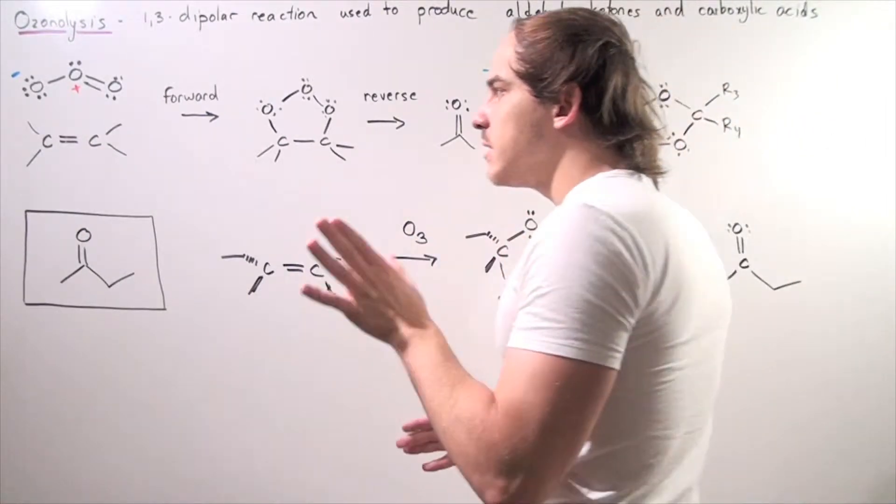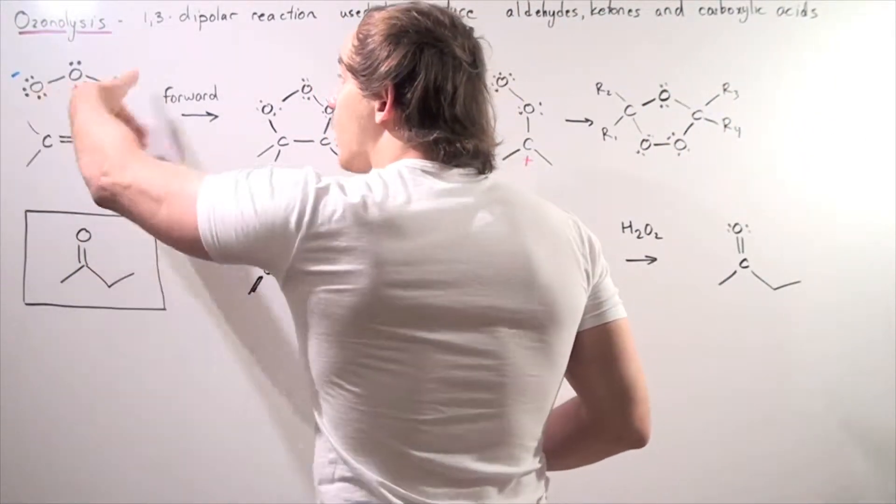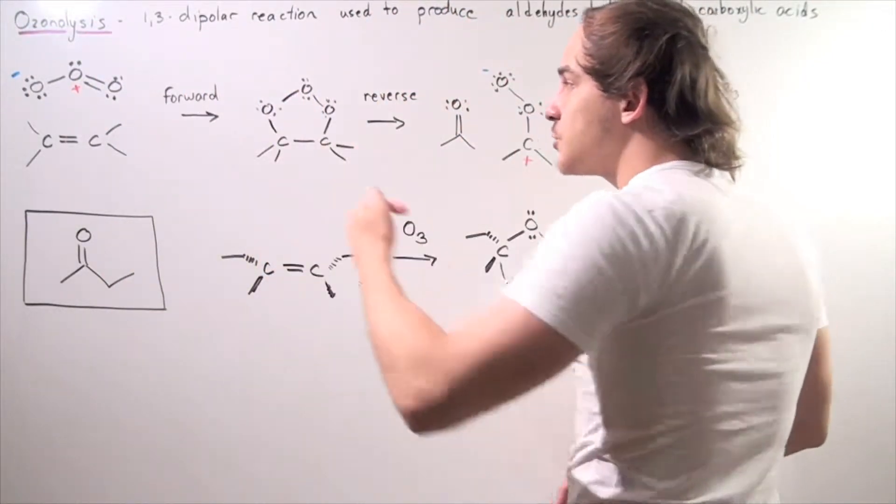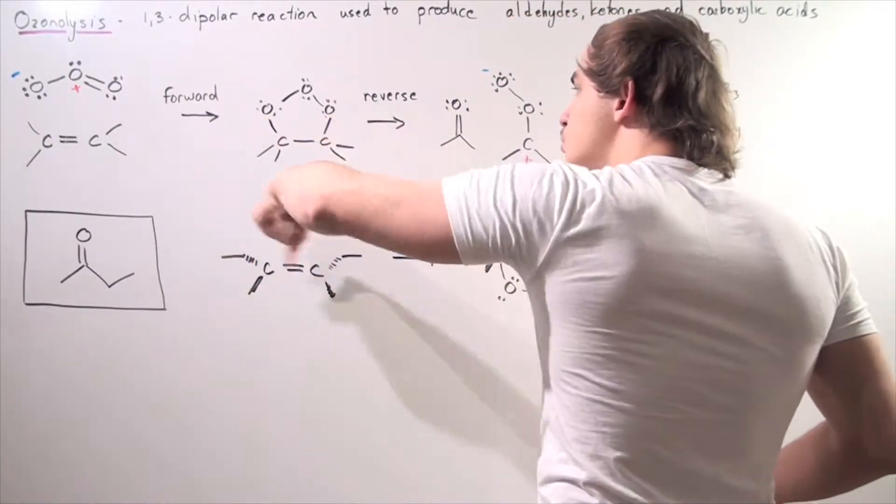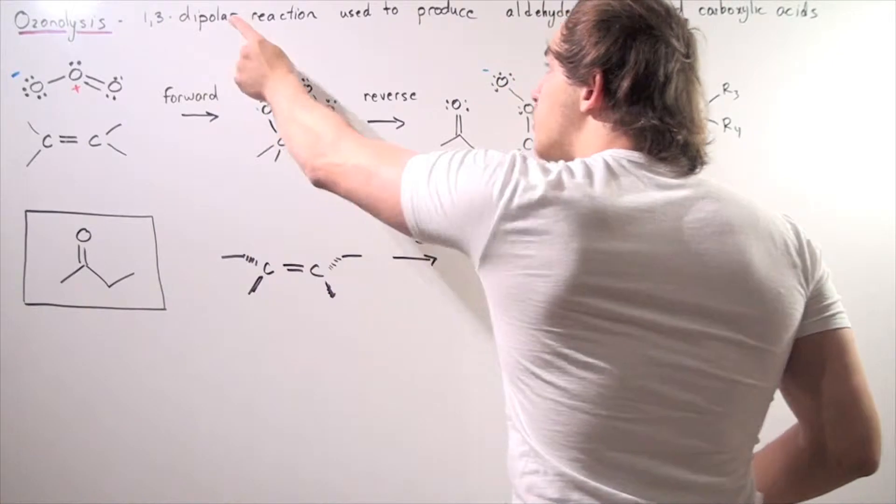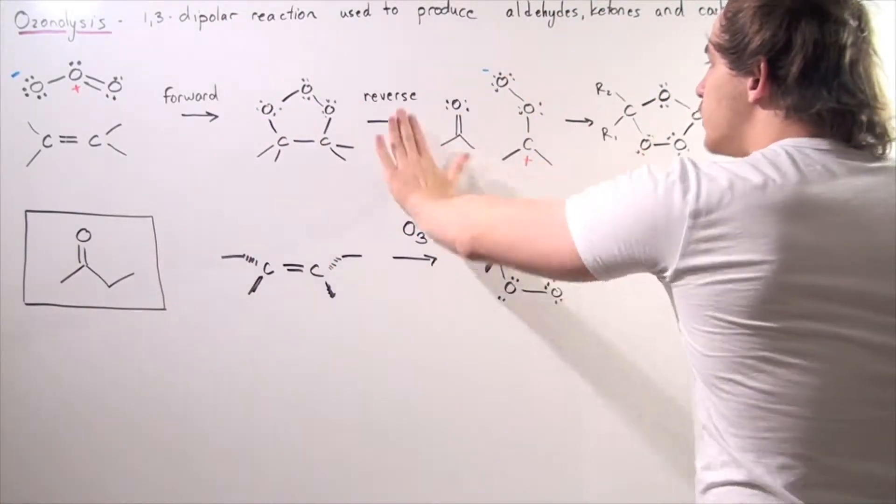We begin with some sort of alkene shown here and we add our ozone molecule. A forward 1,3-dipolar reaction takes place to produce the primary ozonide. Then a reverse 1,3-dipolar reaction takes place and we have the following two products.